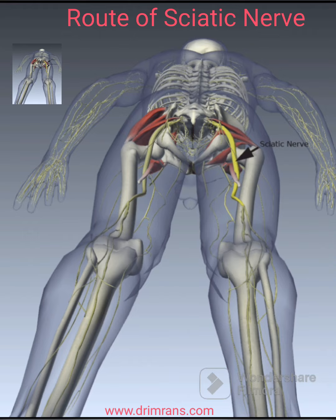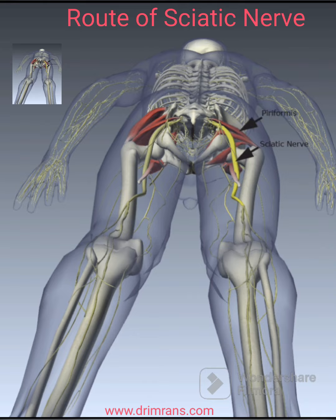The sciatic nerve is derived from the lumbosacral plexus. After its formation, it leaves the pelvis and enters the gluteal region via the greater sciatic foramen, inferior to the piriformis muscle.